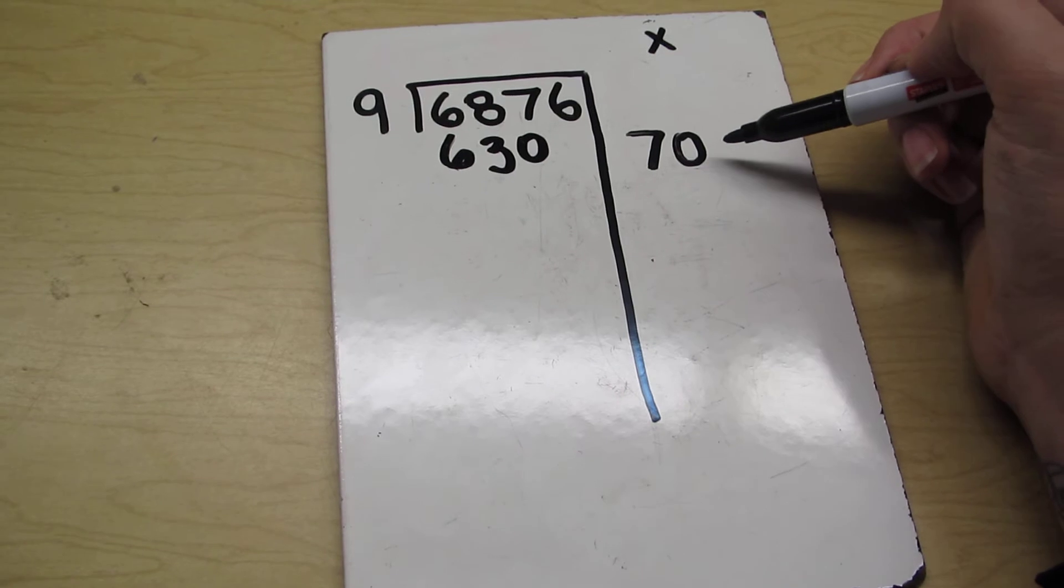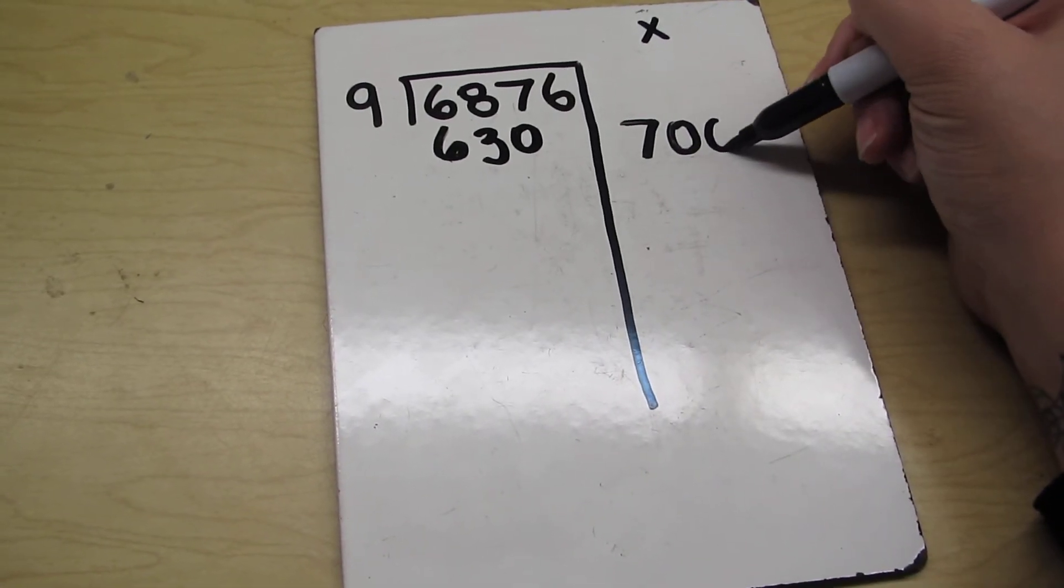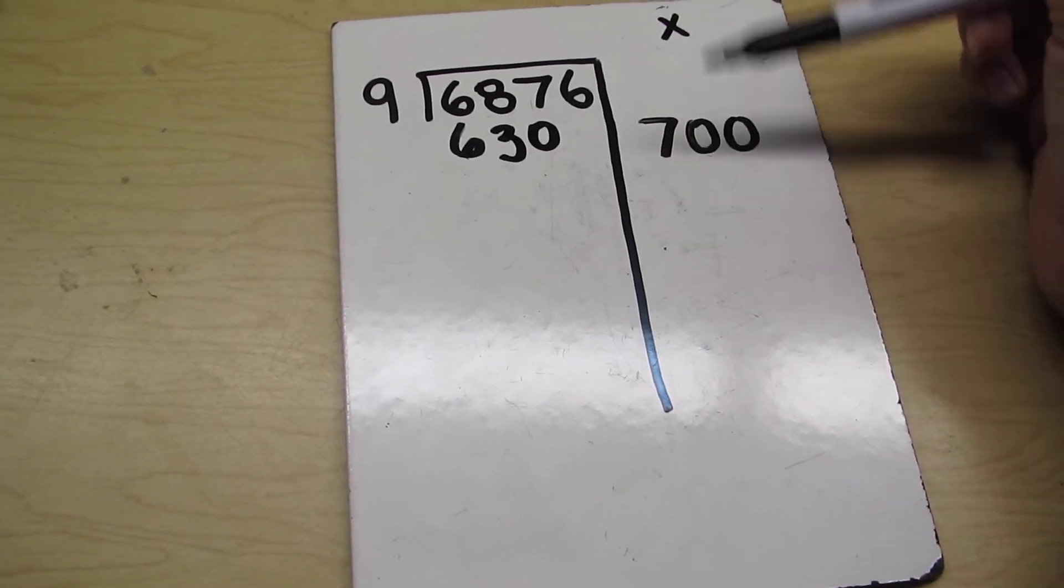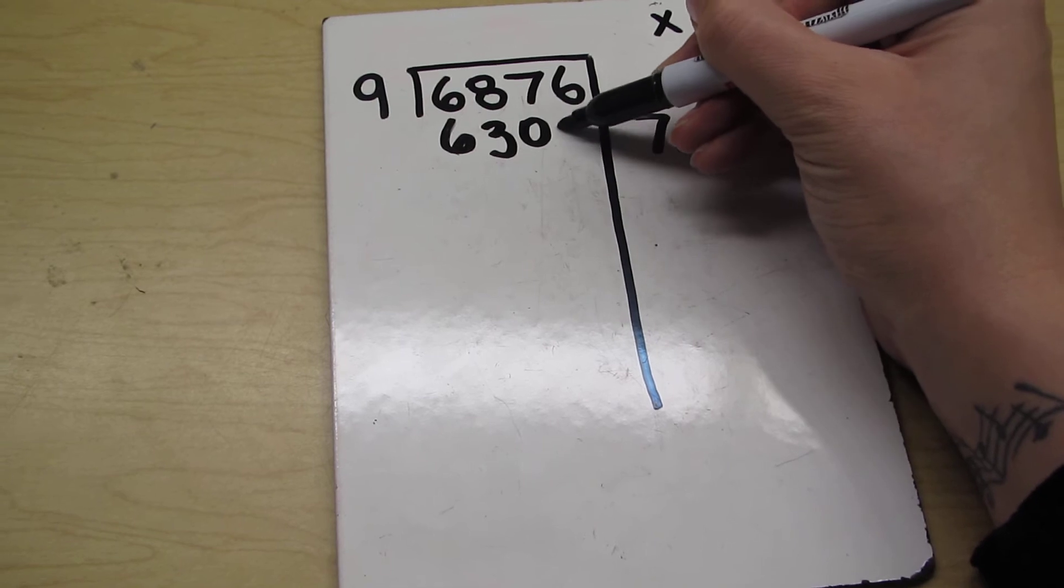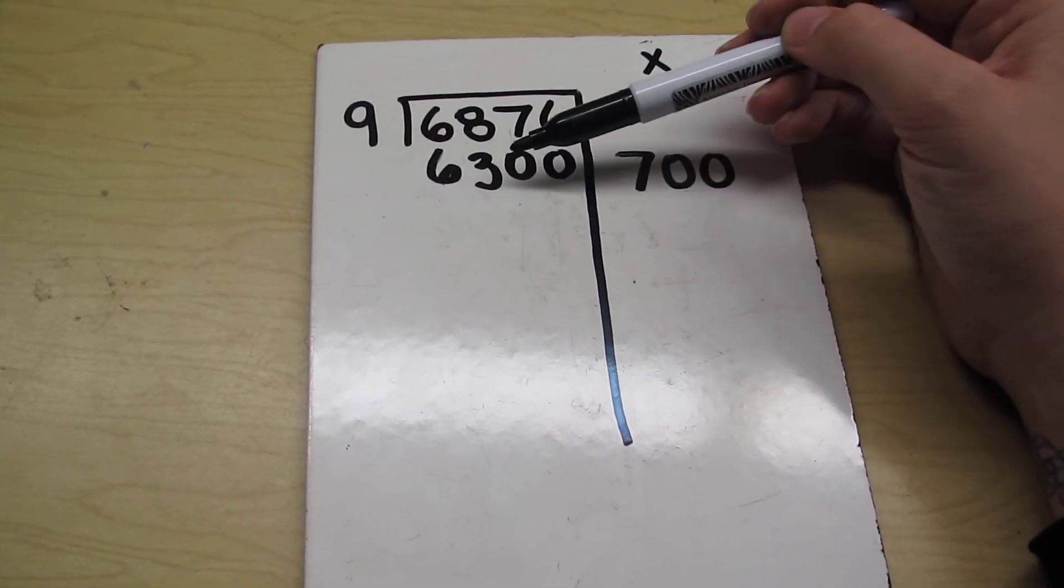But that's not quite enough. I'm going to need to add another zero to that. So now I know that 9 times 7 is 63. I add two zeros at the end, one zero, two zeros, and I get a number that's very close to this, 6,300.